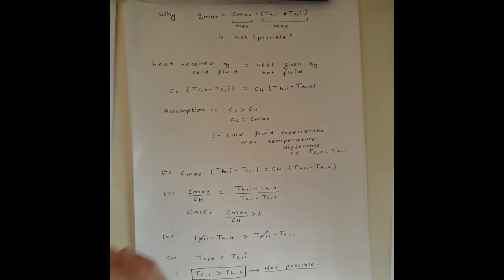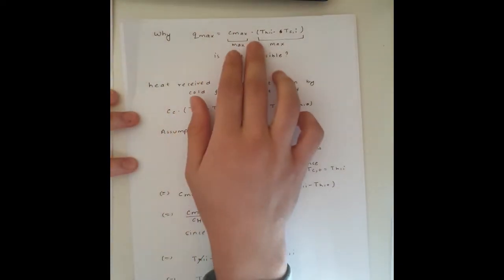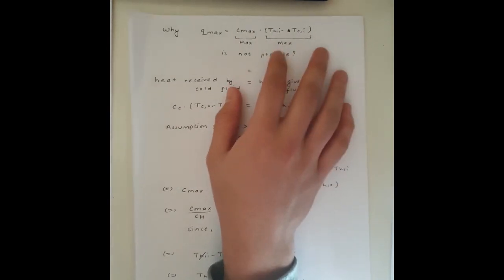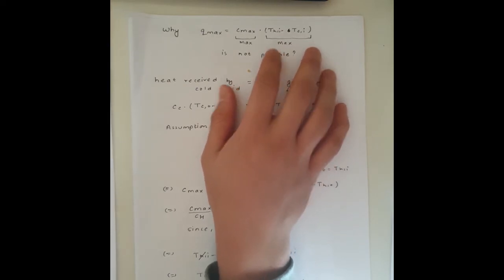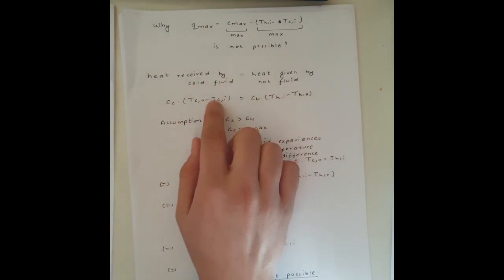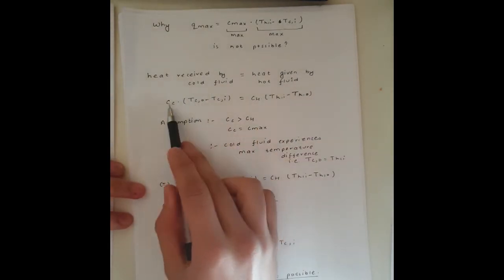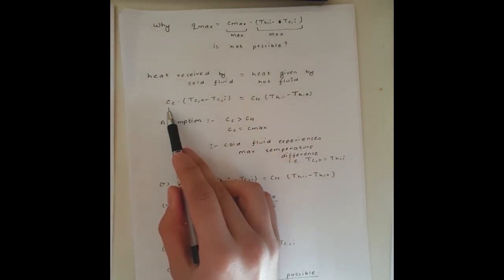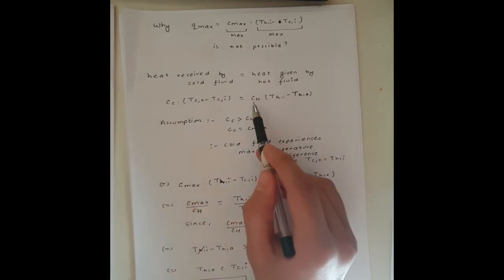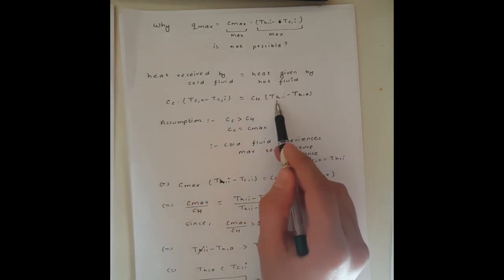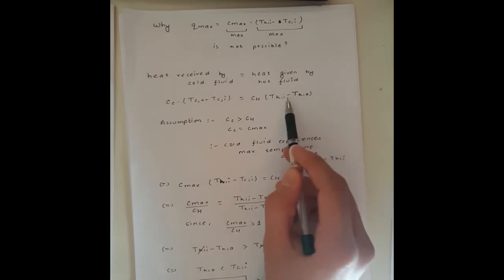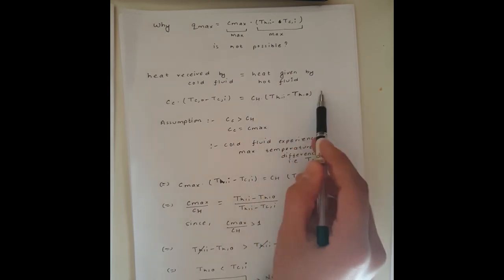Now the real question: why can't Q_max equal C_max times the maximum temperature difference? This is not possible because it violates conservation of energy. Conservation of energy states that the heat received by the cold fluid equals the heat given off by the hot fluid: CC × (TCO − TCI) = CH × (THI − THO).